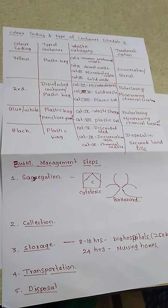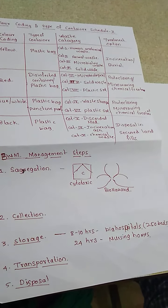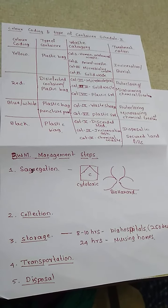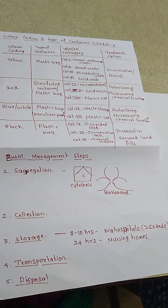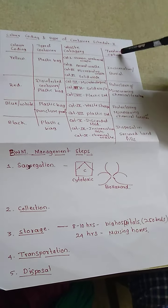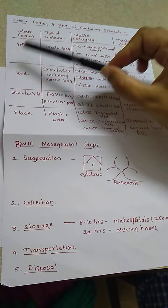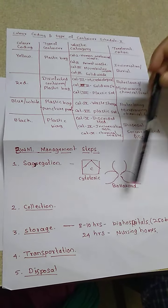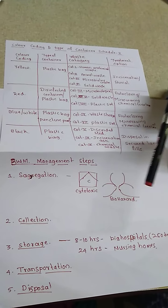Color coding, schedule 1, and schedule 2 are very important from an examination point of view. Color coding is especially important, but you also need to study the category schedule 1 because it forms the base for understanding schedule 2. The biomedical waste management steps are also a very important aspect for your examinations.